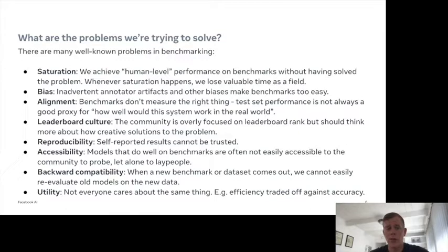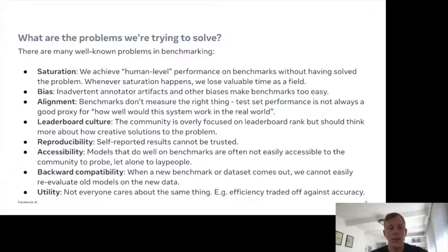Then there are things like bias — inadvertent annotator artifacts and other biases around construction, for example — that make benchmarks too easy, which again makes it look like we are further along than we actually are. There's also alignment: benchmarks don't necessarily measure the right thing. What we really care about is not test set performance on a fixed test set, but how well a system would work in the real world. Leaderboard culture is also very prevalent — the community is too focused on rank, which is actually pretty arbitrary.